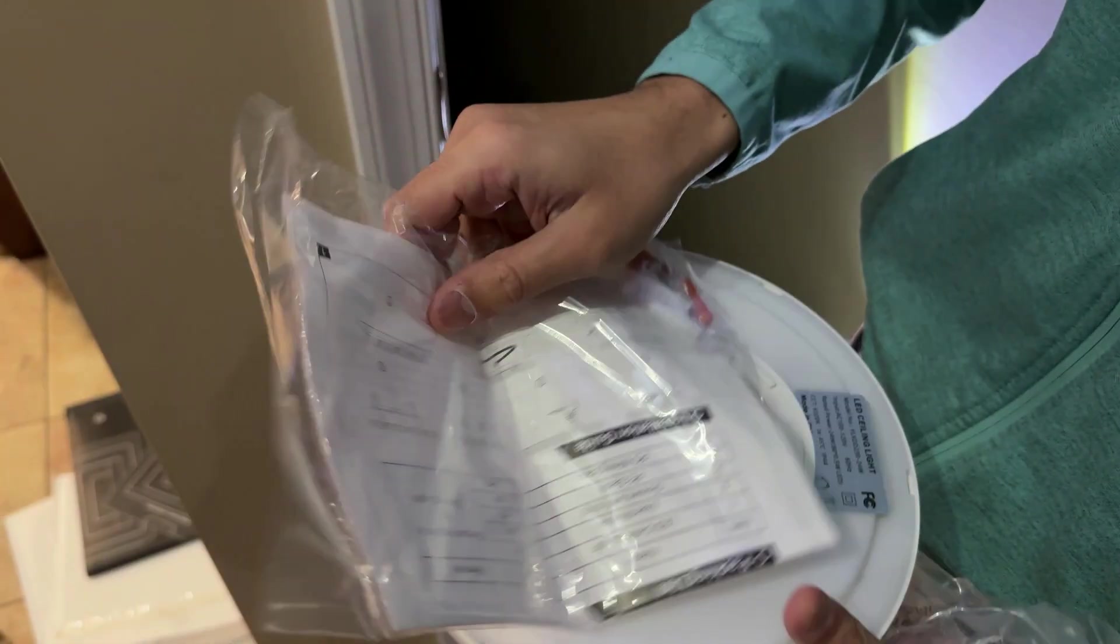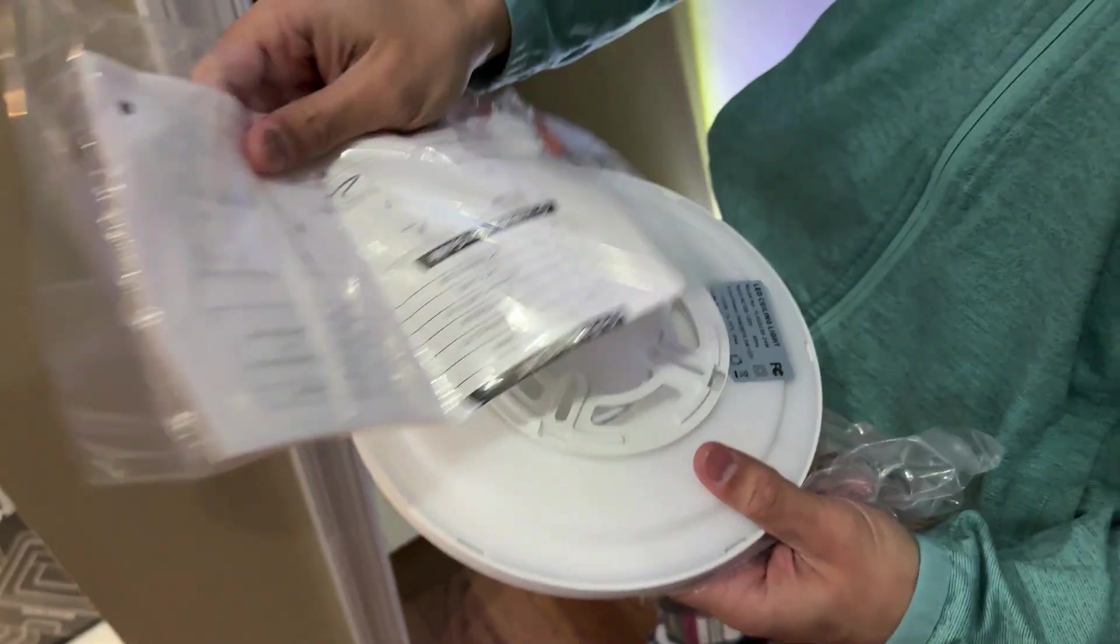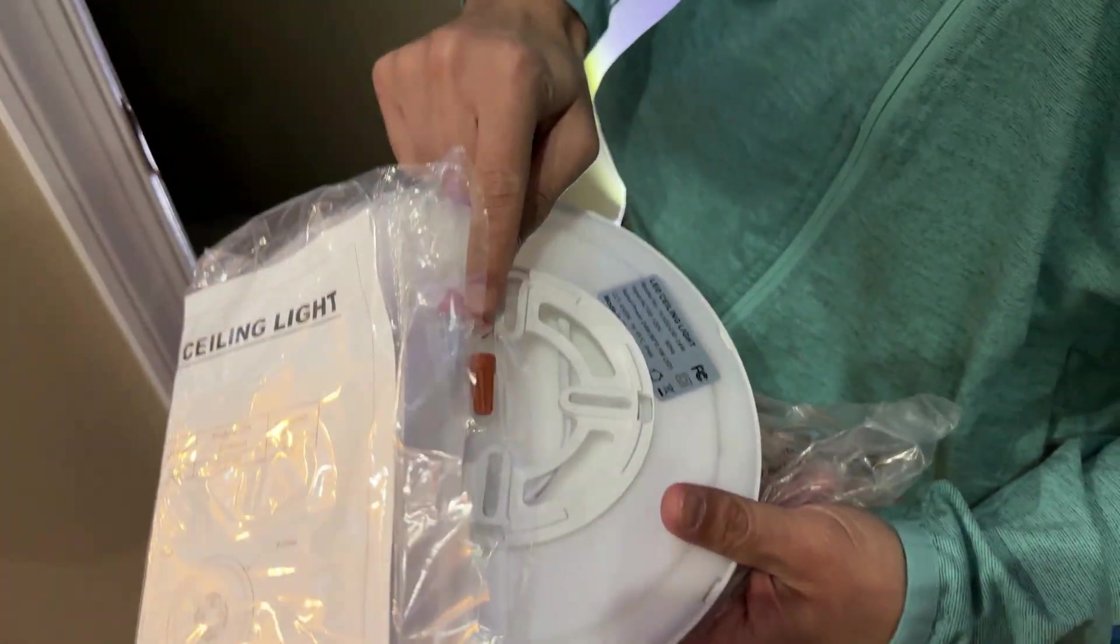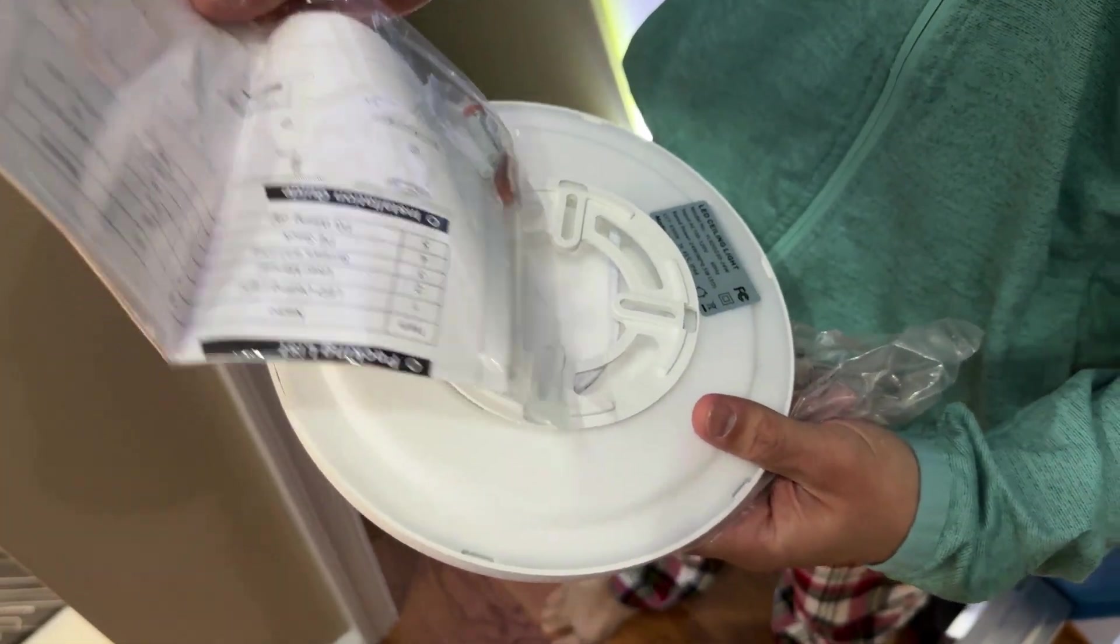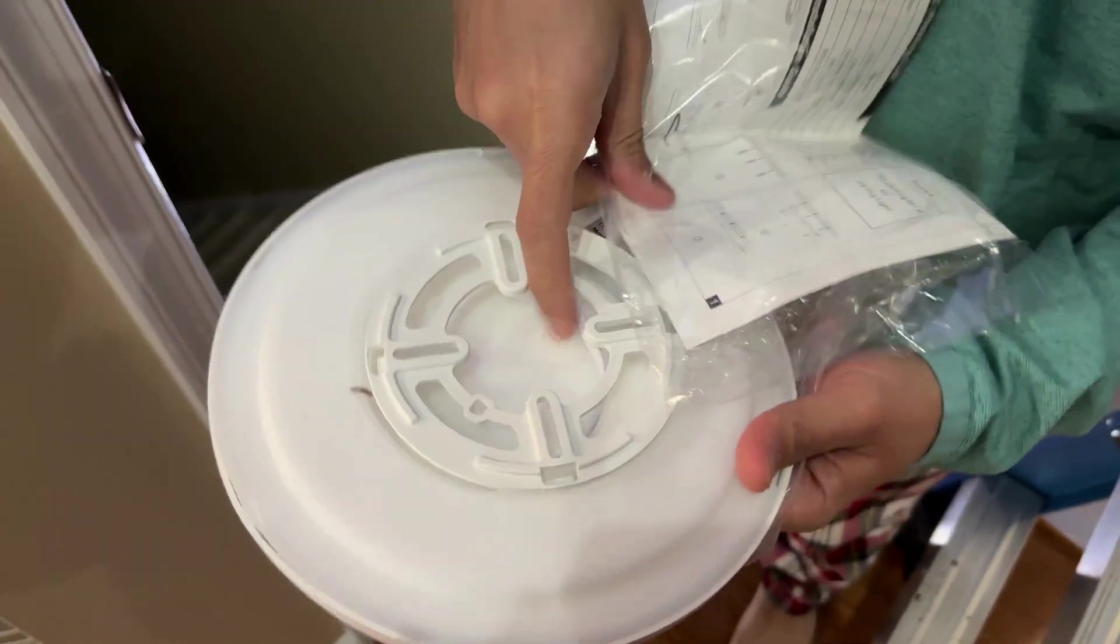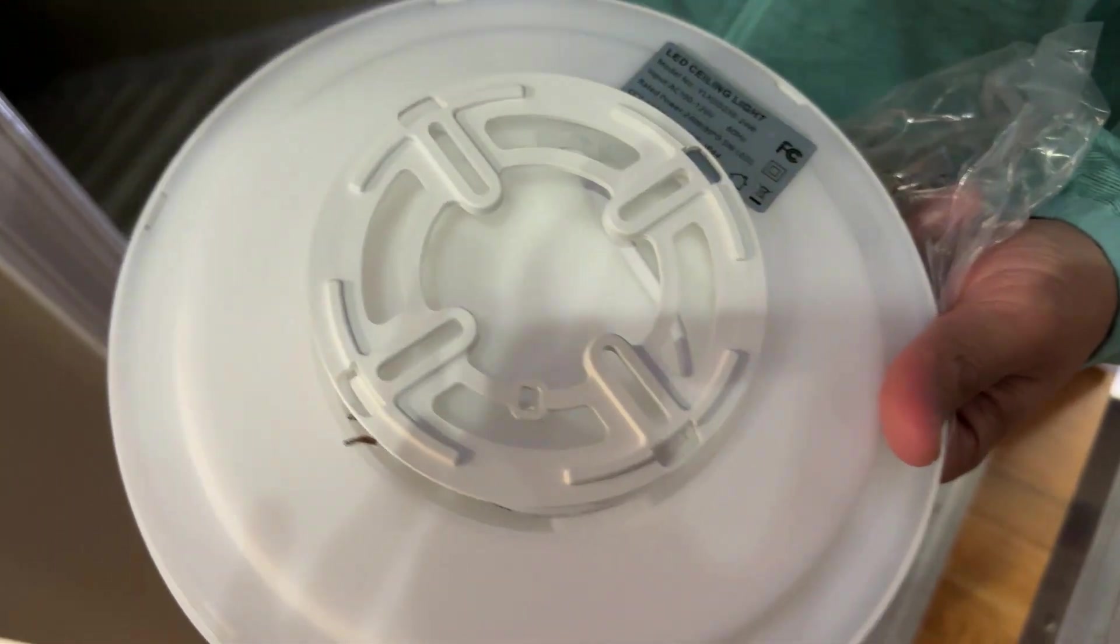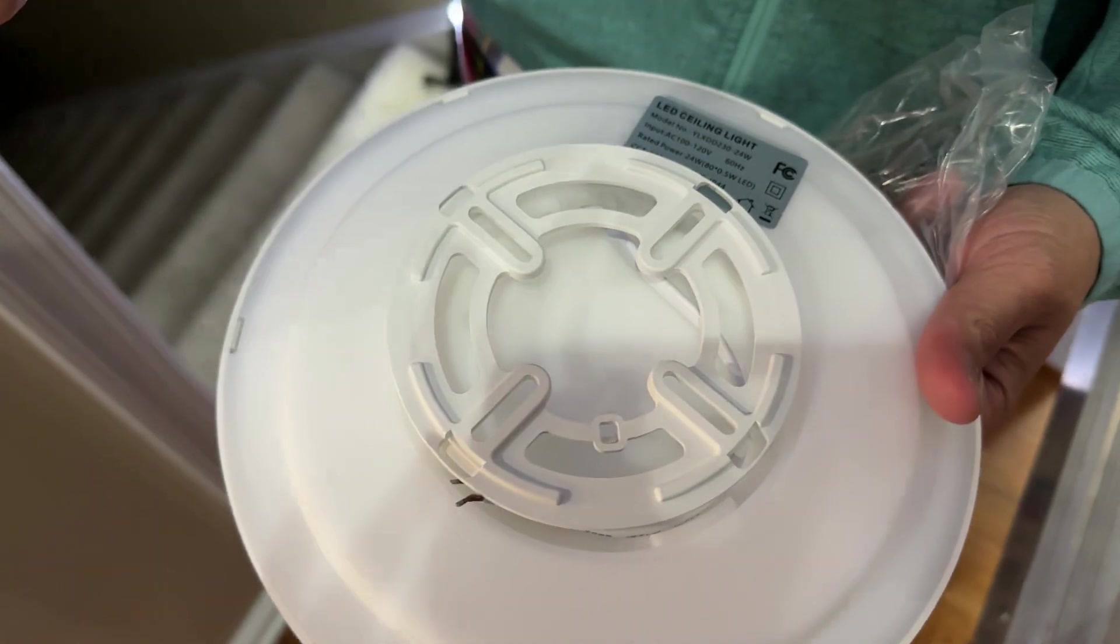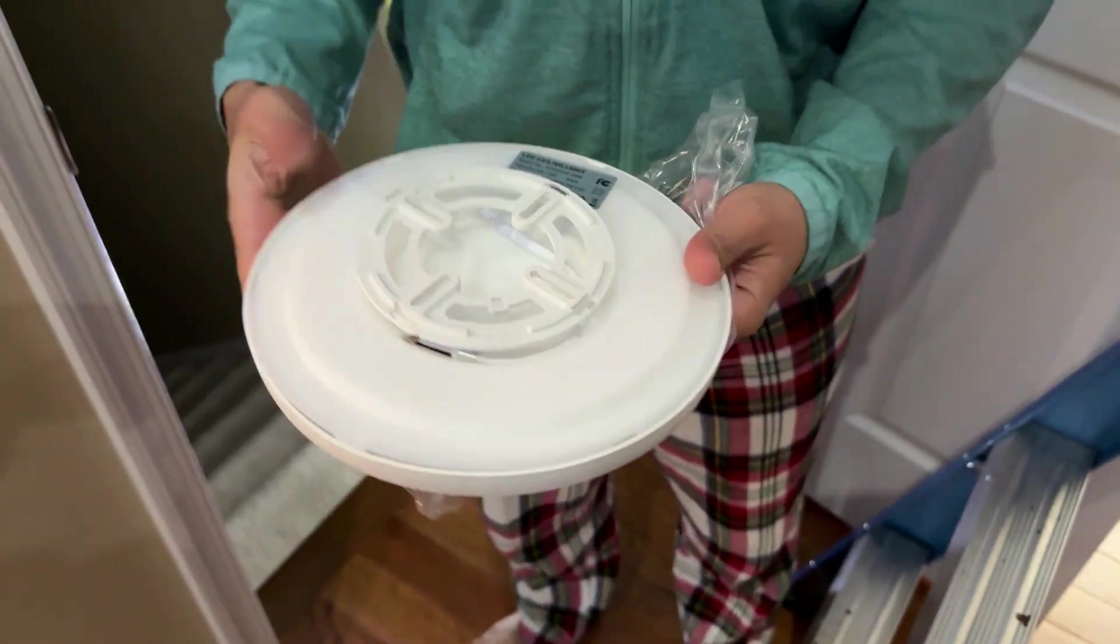I'm just going to use the screws that are already on the old fixture. There are some wire ties as well, but I'm sure the old one also has that. This one doesn't even have a ground. Let's get that out of the way.